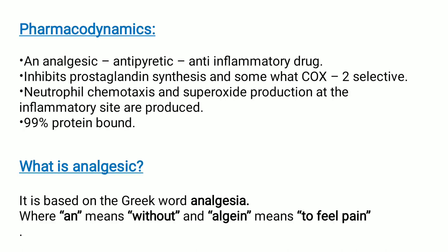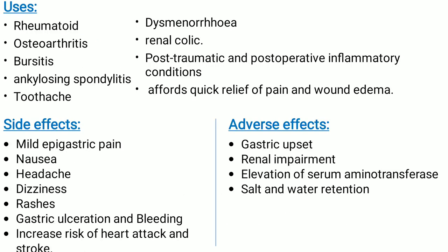What is analgesic? It is based on the Greek word 'analgesia' where 'an' means without, and 'algyne' means to feel pain. Uses of diclofenac: rheumatoid arthritis, osteoarthritis, bursitis, ankylosing spondylitis, toothache, dysmenorrhea, renal colic, post-traumatic and post-operative inflammatory conditions — it offers quick relief of pain and wound edema. Side effects: mild epigastric pain, nausea, headache, dizziness, rashes, gastric ulceration and bleeding, increased risk of heart attack and stroke. Adverse effects: gastric upset, renal impairment, elevation of serum aminotransferase, salt and water retention.